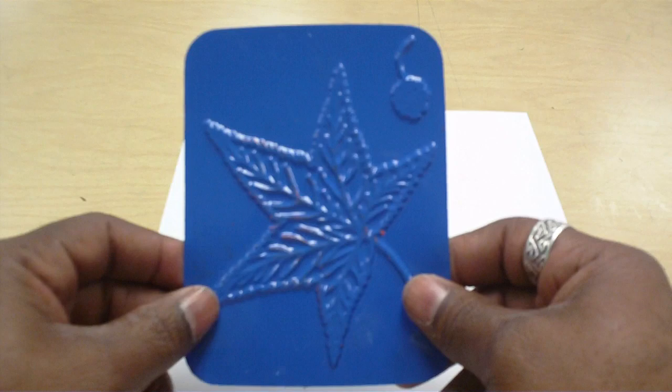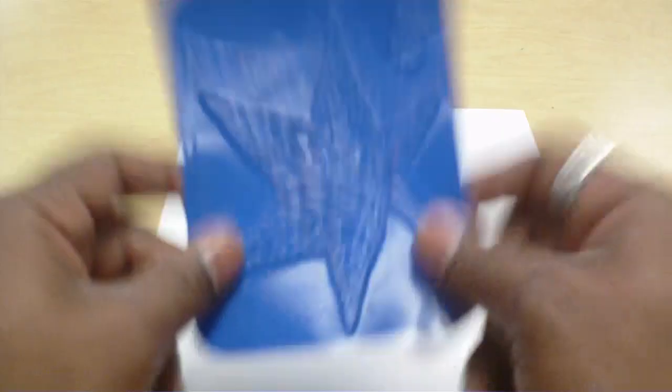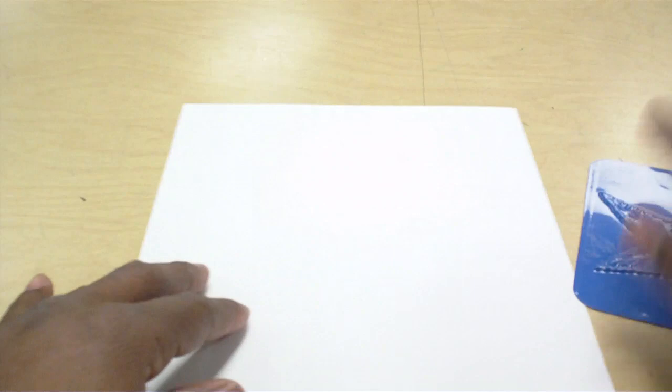So without further ado let me show you what we're going to do. We are going to be using our rubbing plates today. Now as you can see there's a leaf on it. I have different rubbing plates with different leaves and we're going to be making ourselves a picture using these things and you're going to find that they're very easy to use.